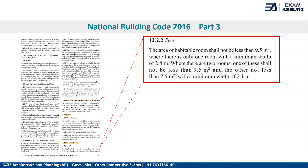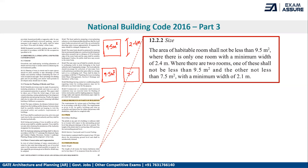As per NBC, the area of a habitable room shall not be less than 9.5 square meters, and if there is one room the minimum width should be 2.4 meters. In case there are two rooms, one of the rooms shall not be less than 9.5 square meters and the other should not be less than 7.5 square meters.